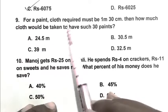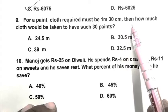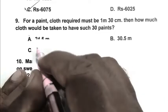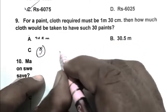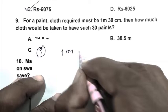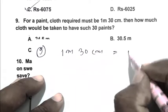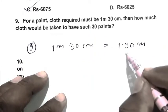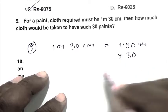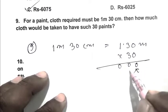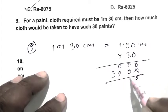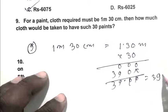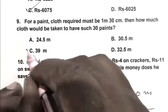Question number 9. For a pant, cloth required must be 1 meter 30 centimeters. How much cloth would be needed for 30 such pants? Cloth required for one pant is 1.30 meters. For 30 pants, we multiply by 30. The answer is 39 meters. So C is the right answer.